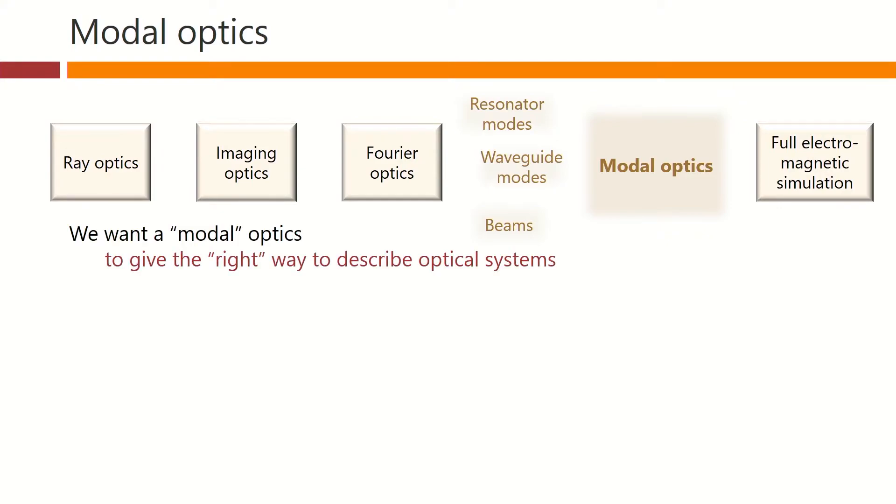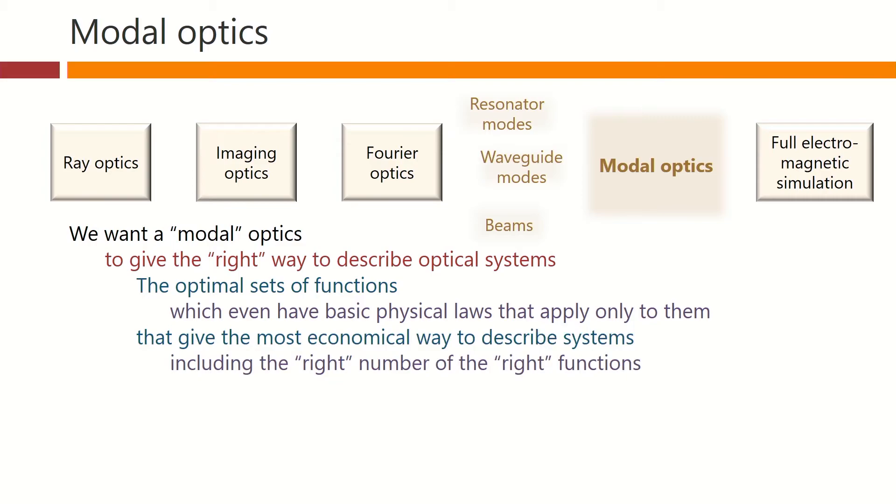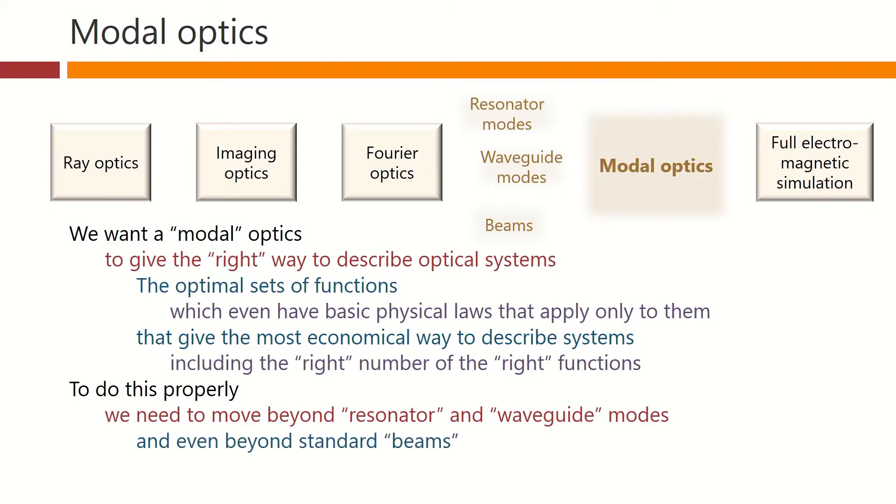We want some kind of modal optics to give us the right way to describe optical systems, the optimal sets of functions, which might even have basic physical laws that apply only to them, and that give us the most economical way to describe systems, including the right number of the right functions. To do this properly, we need to move beyond the resonator and waveguide modes that we're used to, and even beyond the ideas of beams.